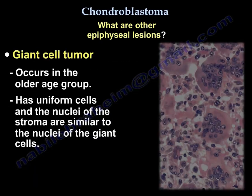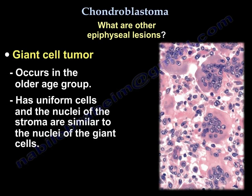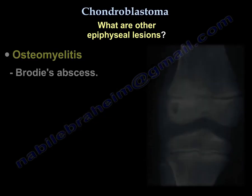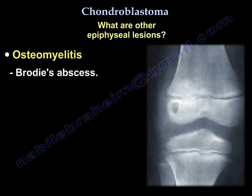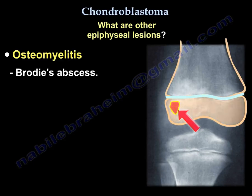Giant cell tumor is another epiphyseal lesion. It occurs in the older age group and has uniform cells, with the nuclei of the stroma similar to the nuclei of the giant cells. Another lesion that can be similar to chondroblastoma is osteomyelitis, specifically Brodie's abscess.